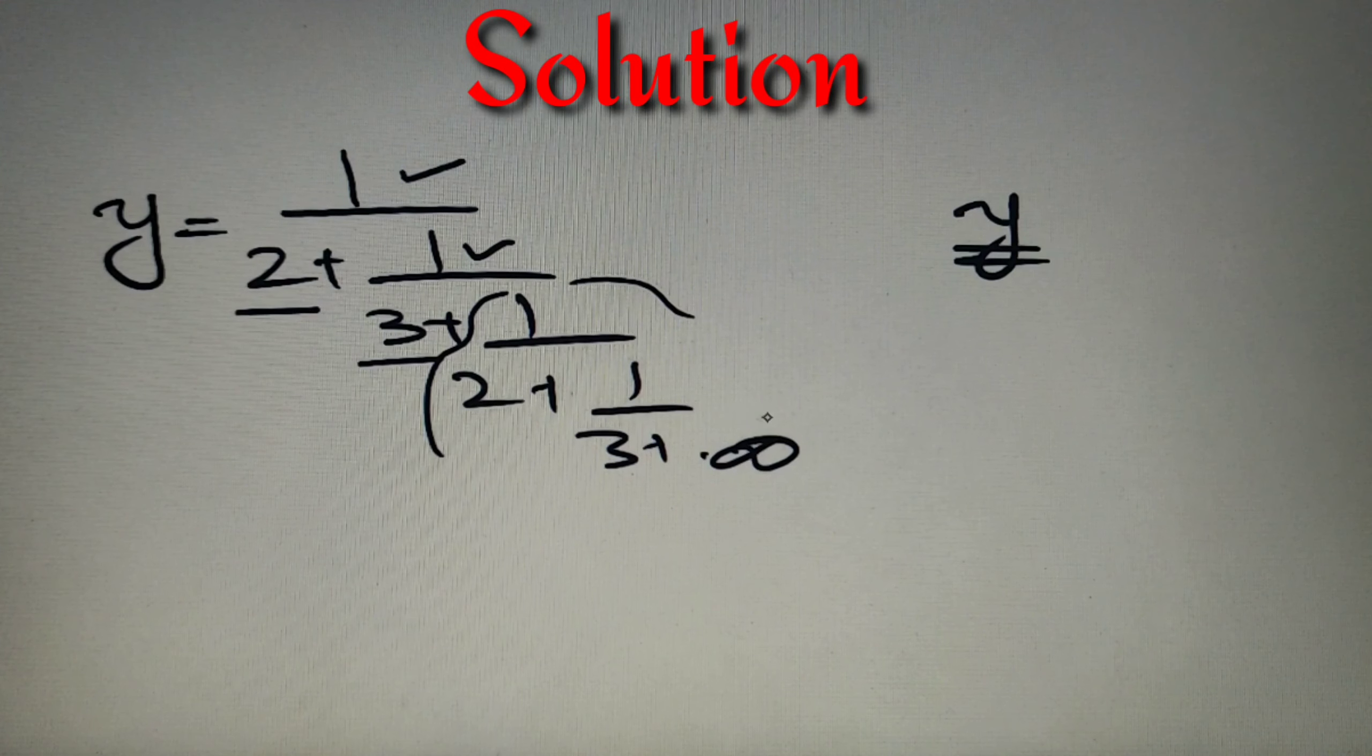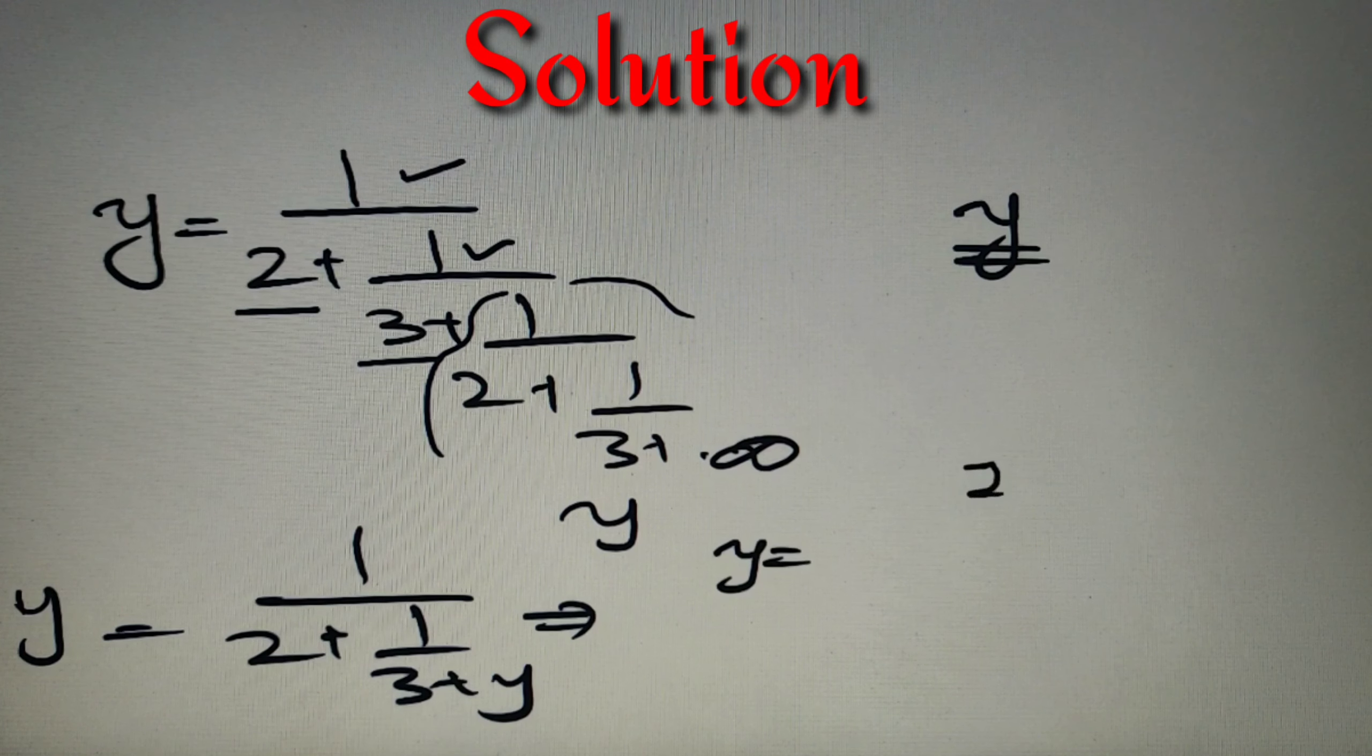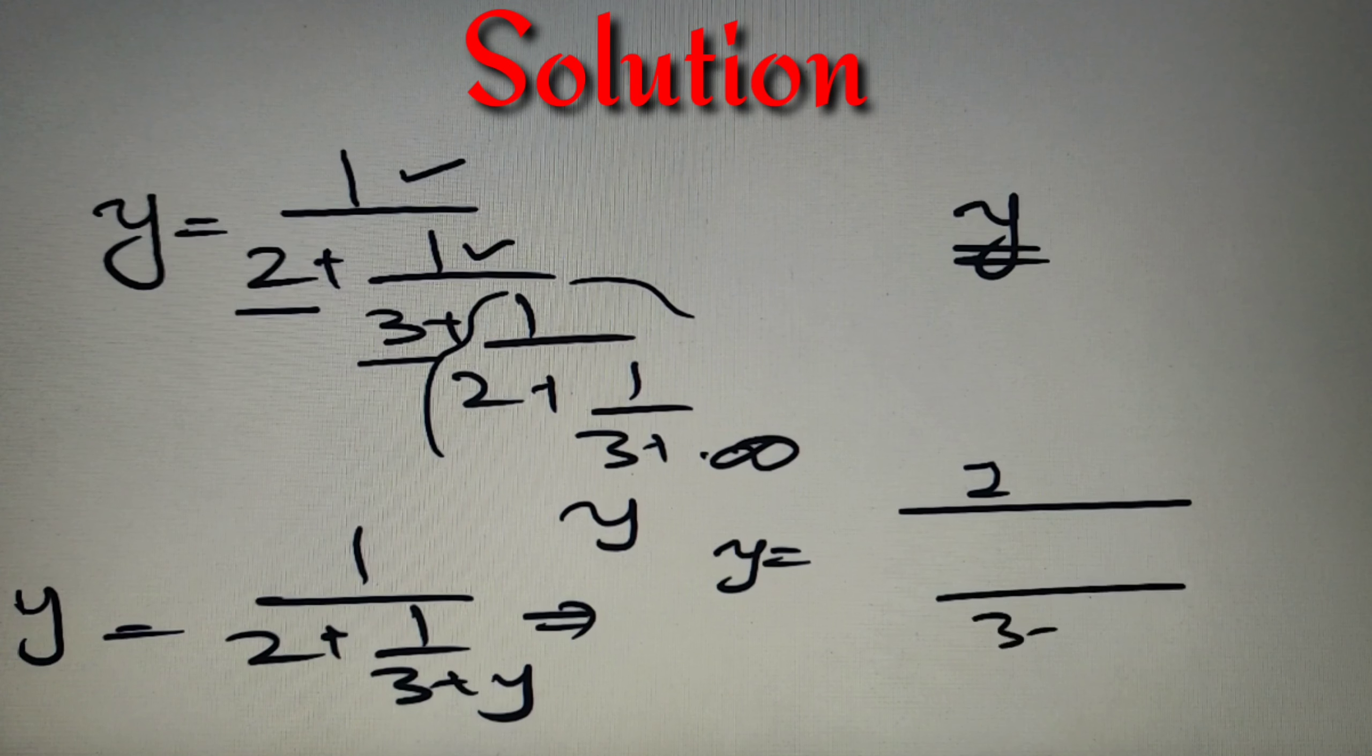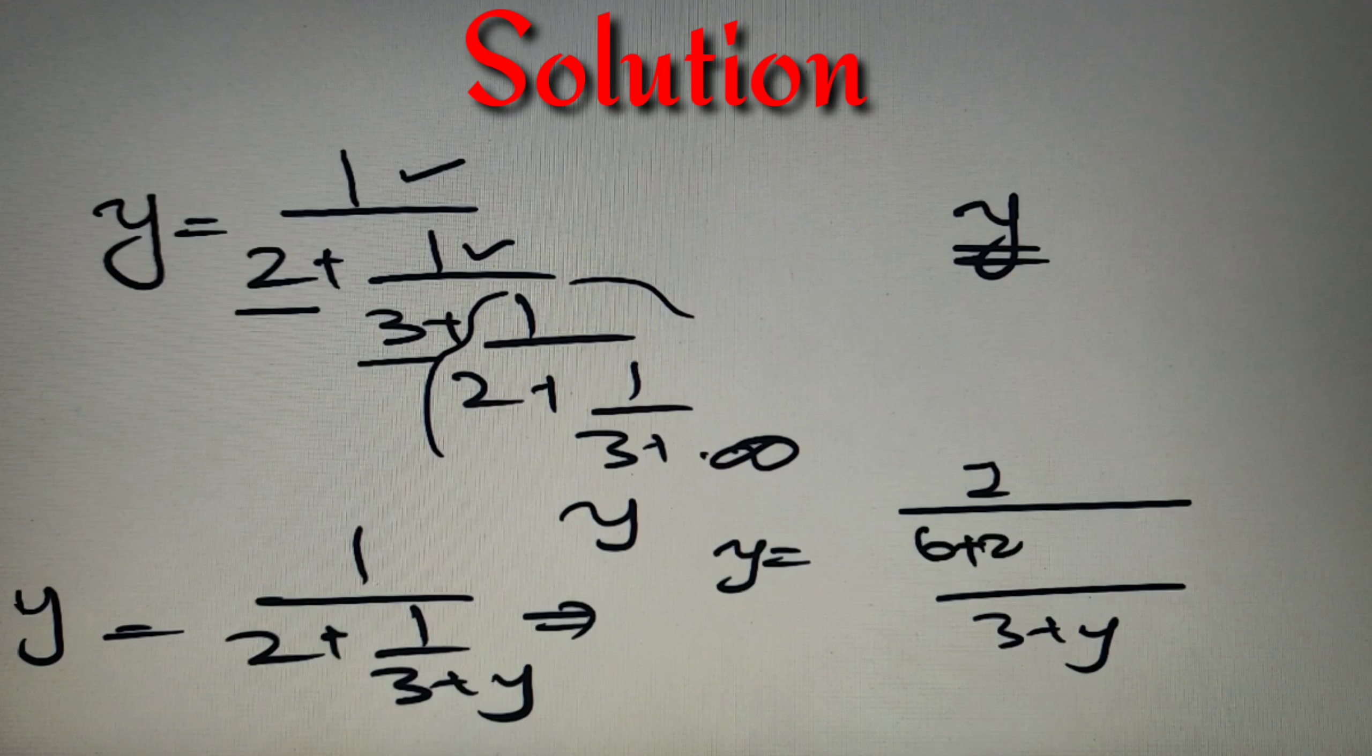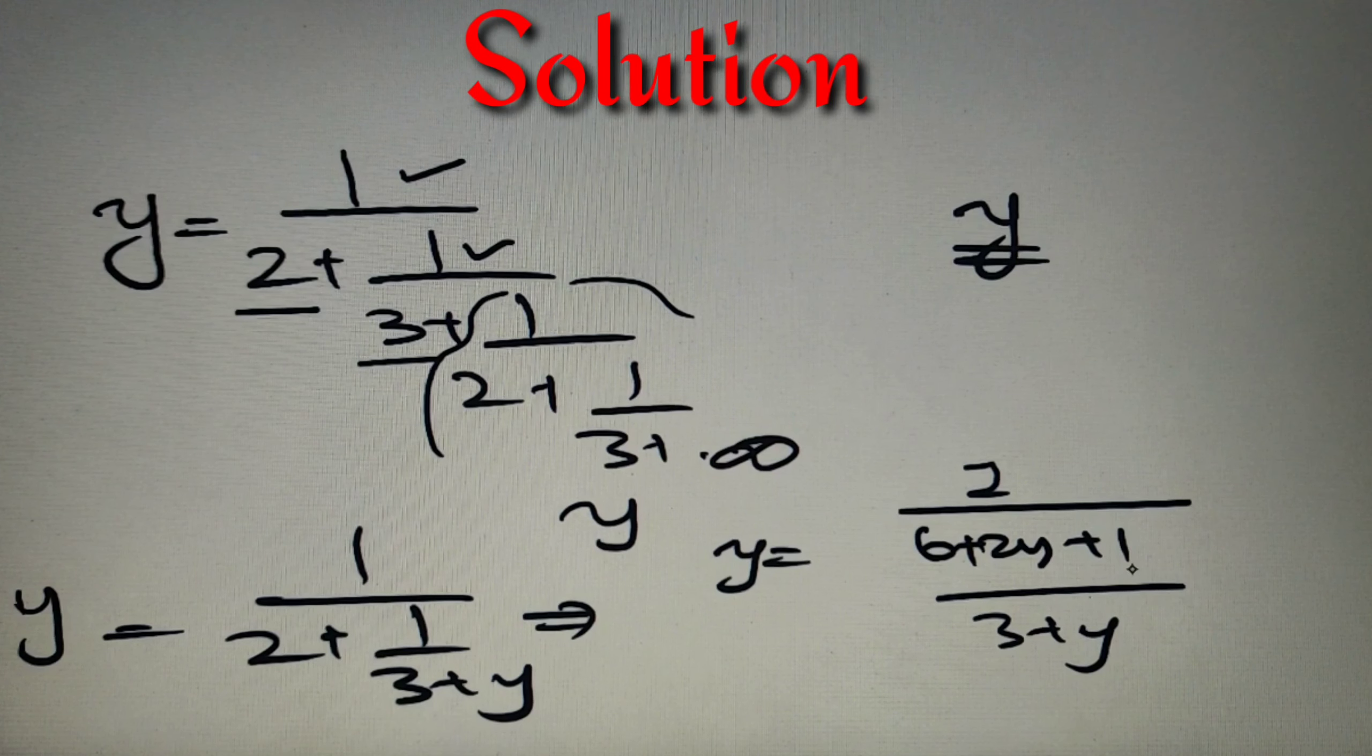Now we have to solve this to find the value of y. Now let's take LCM in the denominator. So we have got 1 by 3 plus y as a denominator and in the numerator we will get 2 into 3 plus y that is equal to 6 plus 2y plus 1.